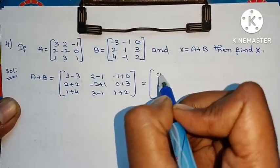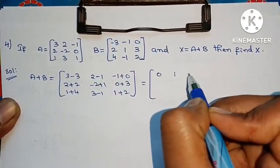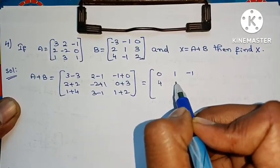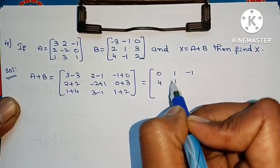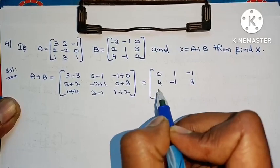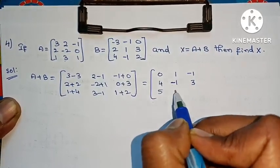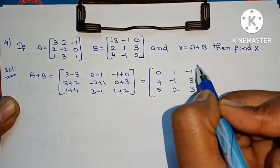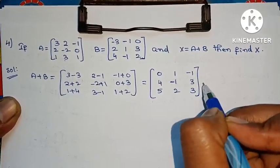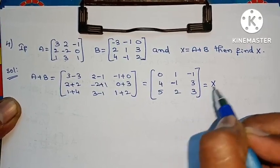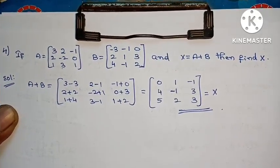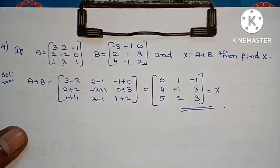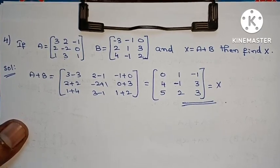Computing: plus 3, minus 3 gives 0; 2 gives 1 — that is 1; minus 1, 2 plus 2 is 4; 2 gives 1, that is 1. Then: 3, 4 plus 1 is 5; 3 gives 1 — that is 2; 2 plus 1 is 3. This equals X. That is the answer — problem is complete. Very easy.